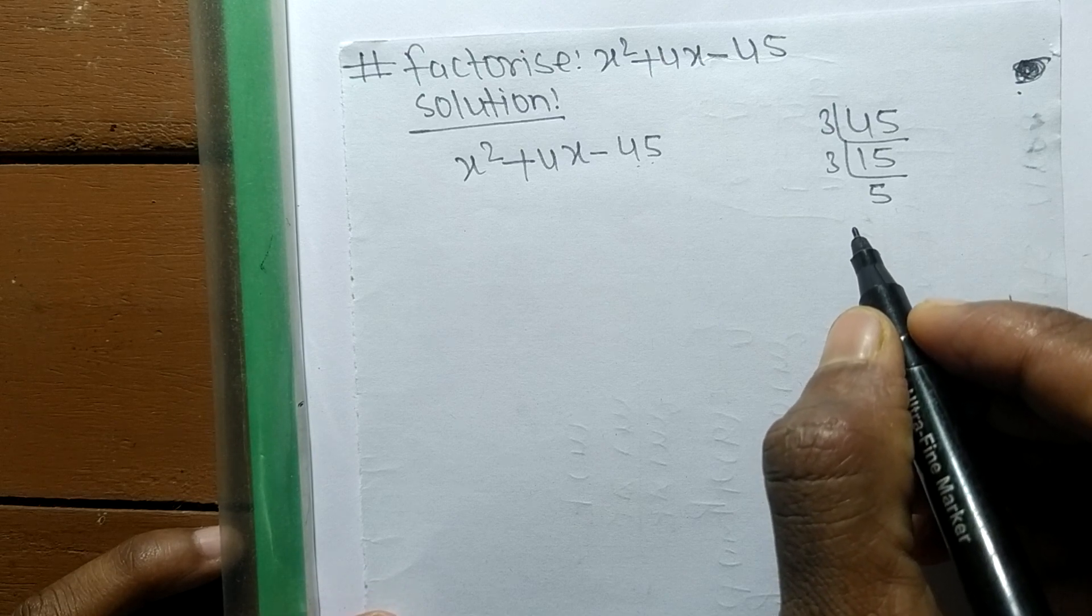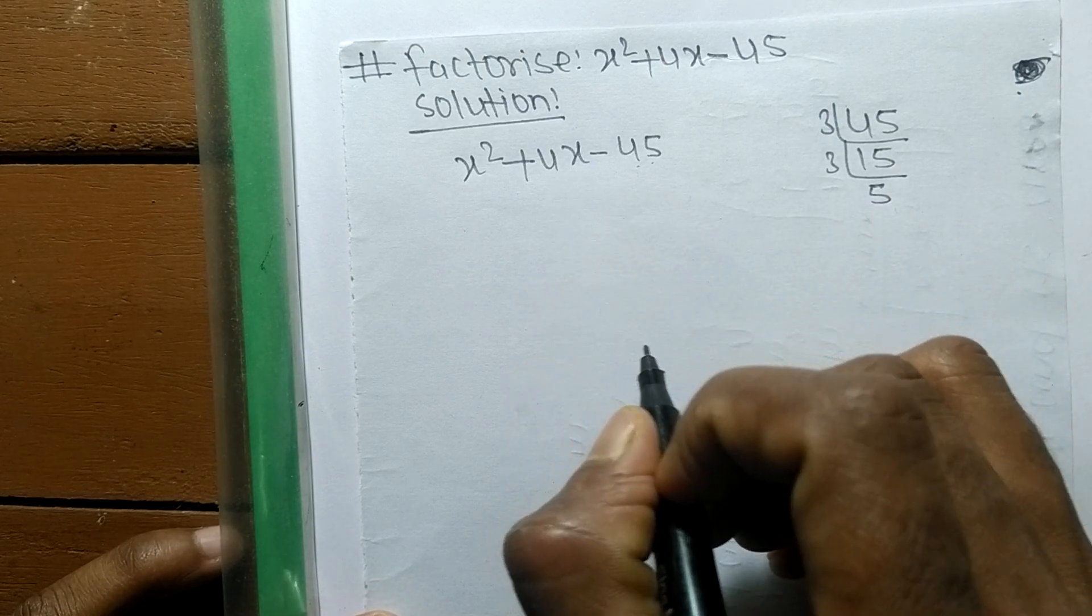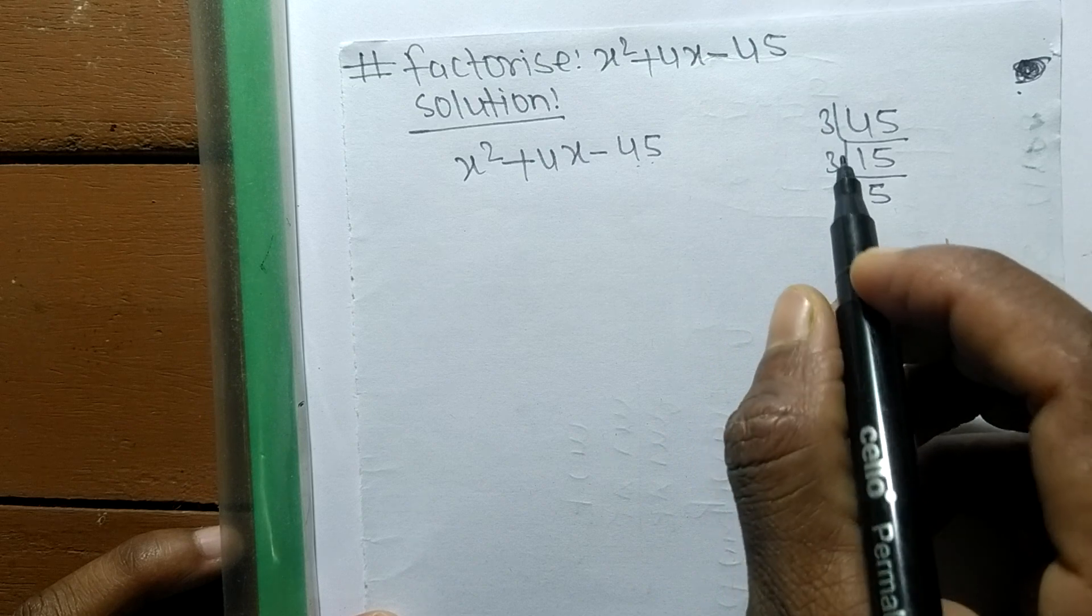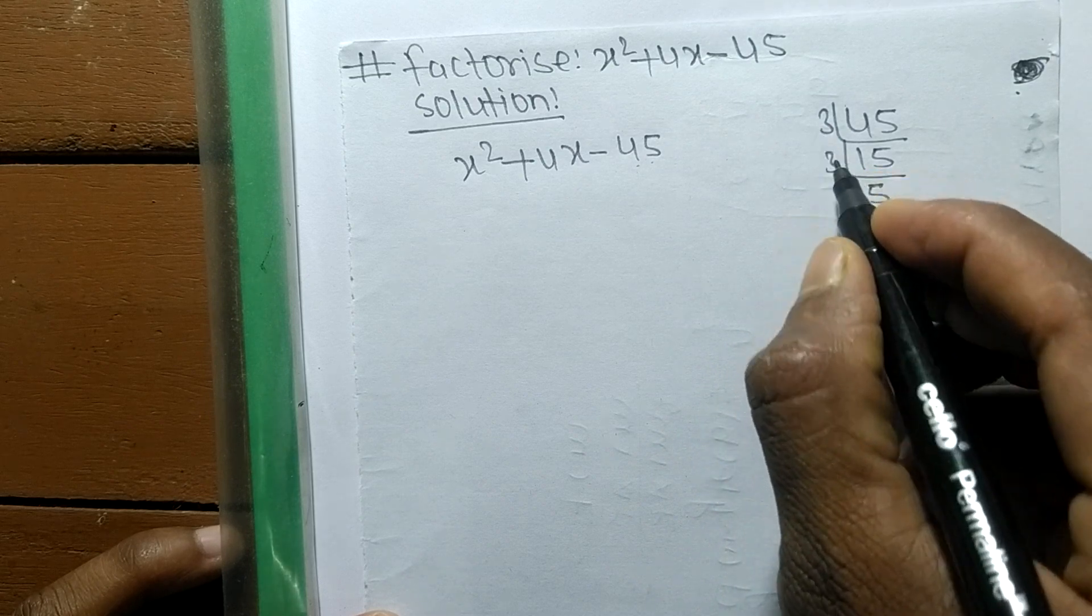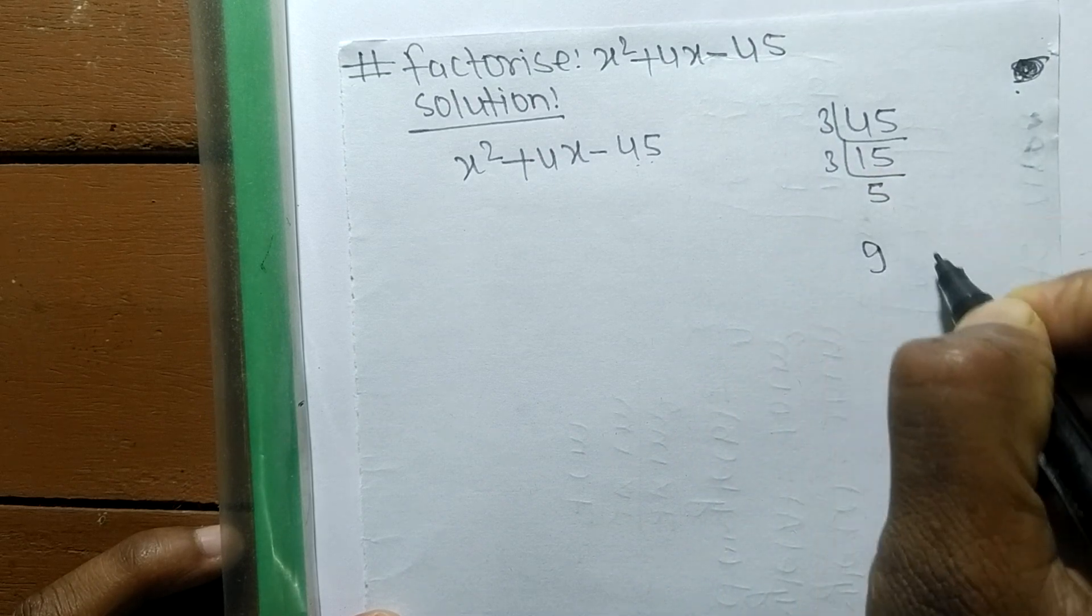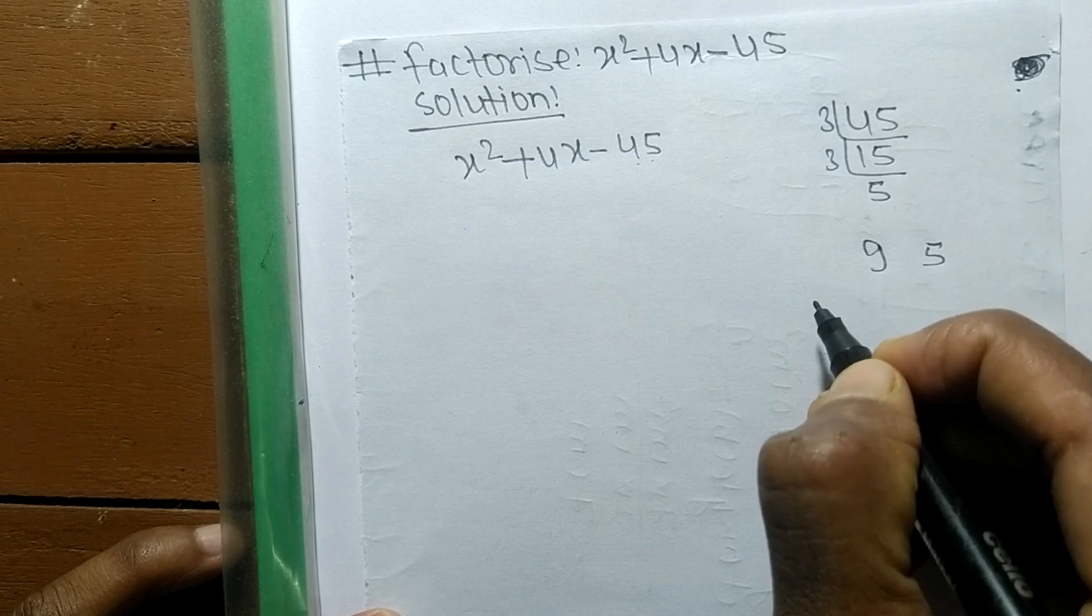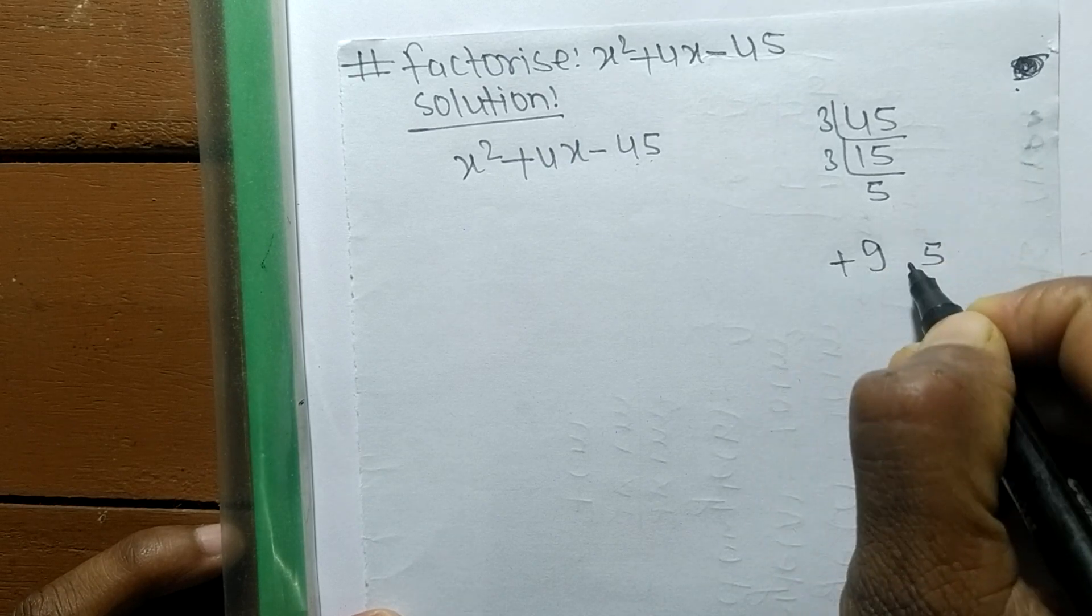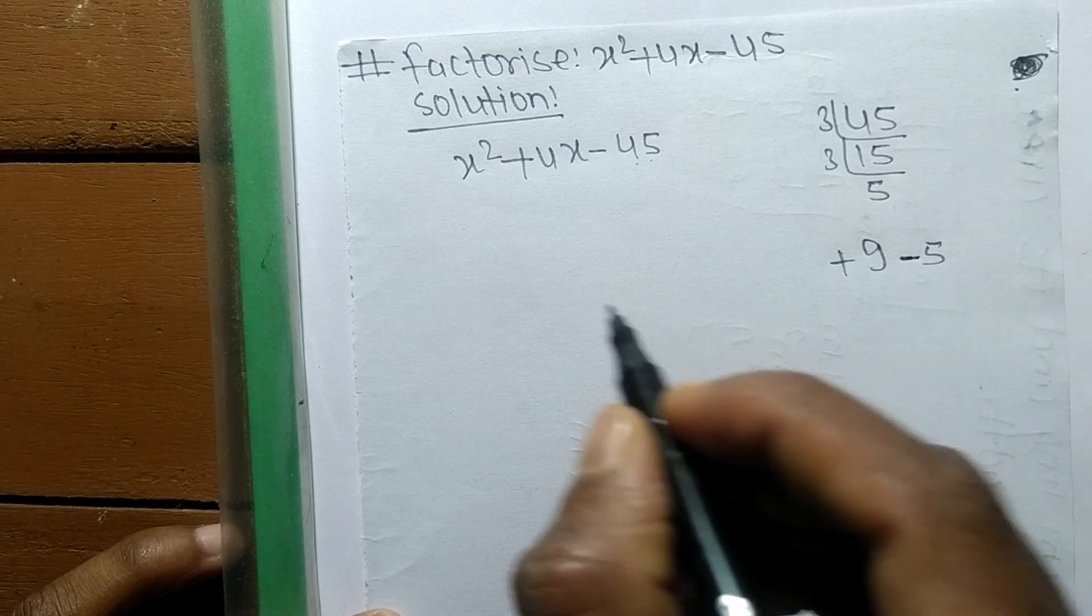When you multiply first two numbers, 3 times 3 means 9, and the remaining is 5. So plus 9 and minus 5, when we do, then we get the result plus 4.